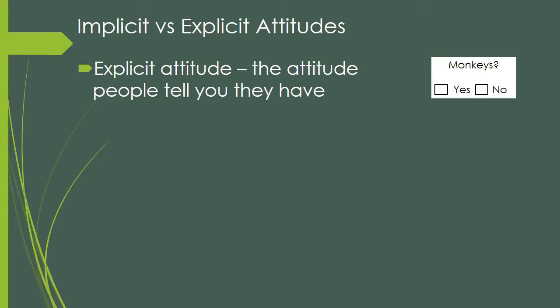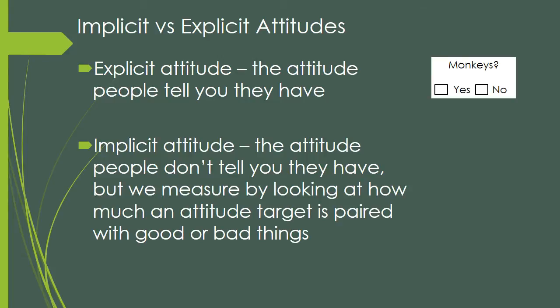That is contrasted with implicit attitudes. It's an attitude that somebody doesn't tell you they have, but we can measure it by looking at how much an attitude target is paired with good or bad things. An implicit attitude doesn't necessarily mean that the person is lying — their implicit and explicit attitude could be the same. So you could ask me how much do you like monkeys, and I'll say I love monkeys, and then you measure my implicit attitude and find, yeah, she really does love monkeys.